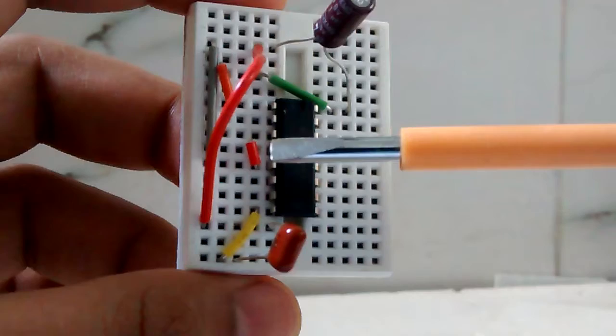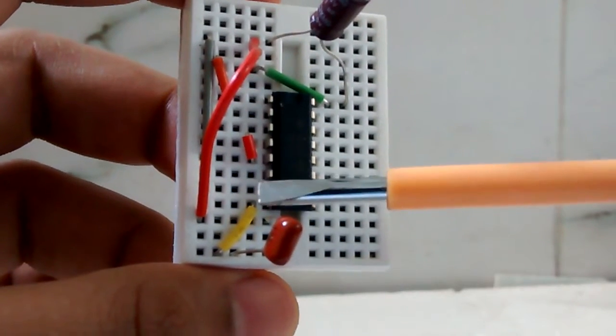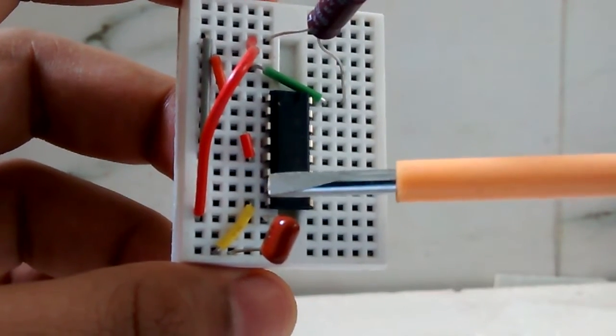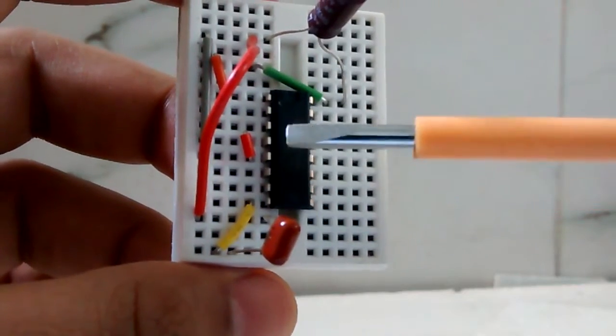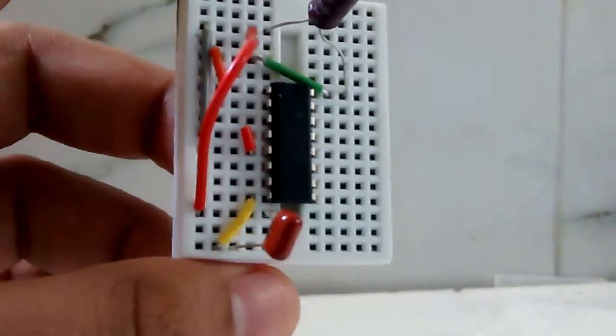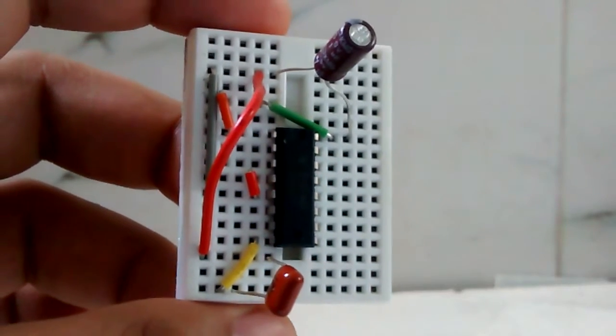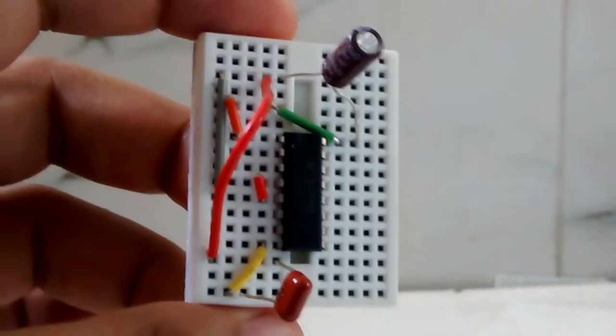Next is the output and input. Pin number 3 and 6 will be connected to the motor terminals. Pin number 7 and 2 will be given with the input signals for the motor to rotate in specific directions. So I will make the setup and show you the working.